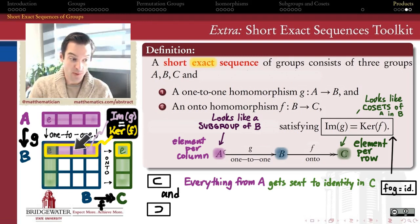So the entirety of this purple row, the image of A, which is a subgroup of B, everything in there is getting sent to the identity element in C, because of image being a subgroup of the kernel.